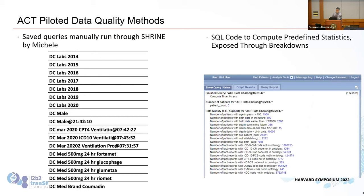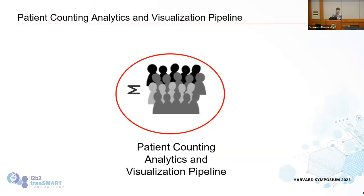There are also data quality methods that have been ongoing for many years in the ACT network — not just the ontology. There's the smoke test that Sean mentioned, and an additional suite of data quality queries that Michelle runs manually to get impressions of network data quality. You can also automate some of this by creating custom SQL breakdowns in I2B2, which is a really neat feature that most people don't know about.